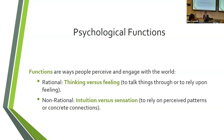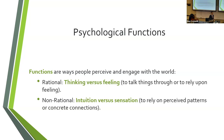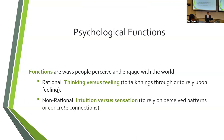There are also psychological functions, to do with how you process information, how you make decisions, how you operate in the world. There are two forms of rational functions and two forms of non-rational functions. The rational functions I prefer to call judging functions — they're to do with how you make judgments and decisions. The non-rational functions I prefer to call perceiving functions — they're to do with how you perceive the world and process information.